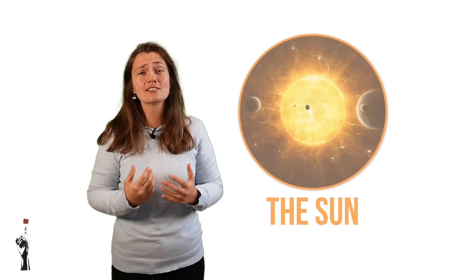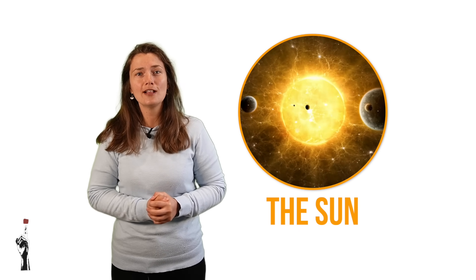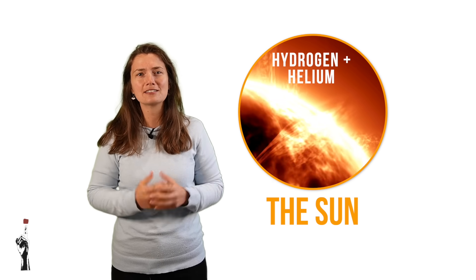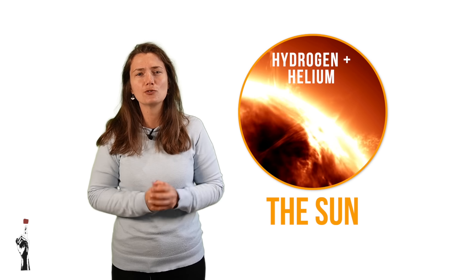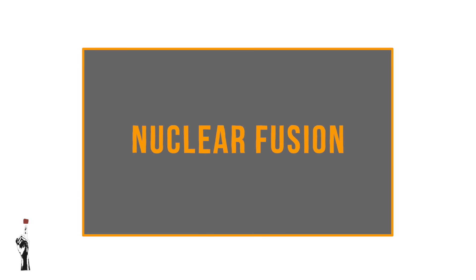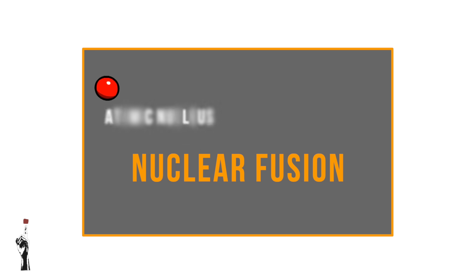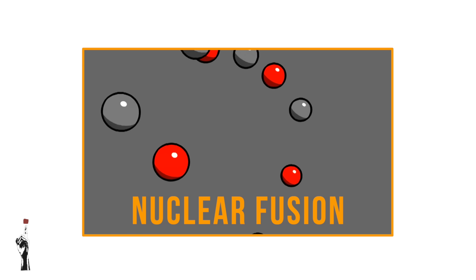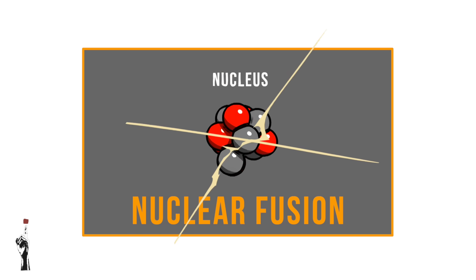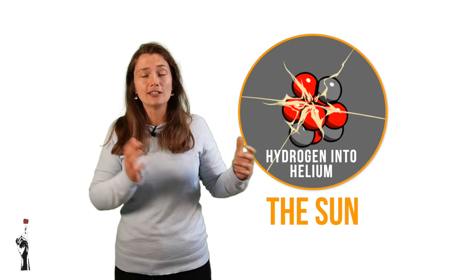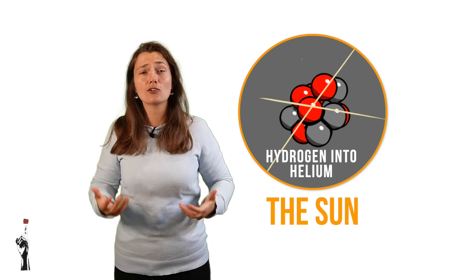Let's start off with the star of the show — the Sun. The Sun isn't just any star; it's a massive ball of hydrogen and helium that is undergoing nuclear fusion to generate a lot of energy. Nuclear fusion is a process where two small atomic nuclei join together to form a larger nucleus, releasing a large amount of energy. Every second, the Sun is turning hydrogen into helium, releasing a large amount of light and heat.